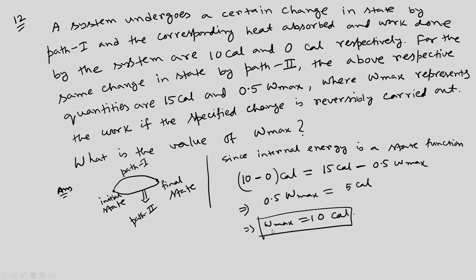The two key points here: internal energy is a state function, and you must read the question carefully — heat absorbed means Q is positive, and work done by the system means W is negative. Equating the internal energy changes for path 1 and path 2 gives W_max equals 10 calorie.